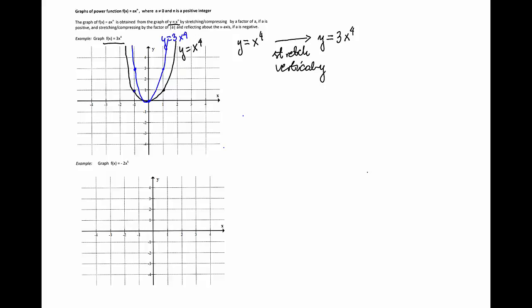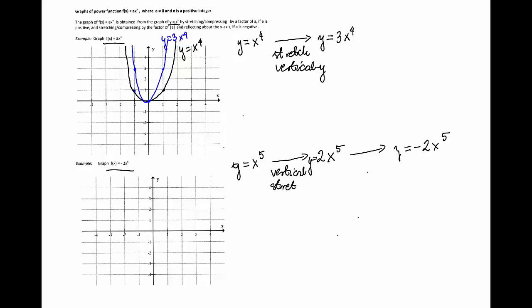Now for the function negative 2x to the fifth, we'll start with the graph of the basic function x to the fifth, then we'll stretch it two times to get y = 2x^5, and then we'll reflect it about the x-axis to get negative 2x to the fifth. So this is the vertical stretch, and the other transformation is reflection about the x-axis.